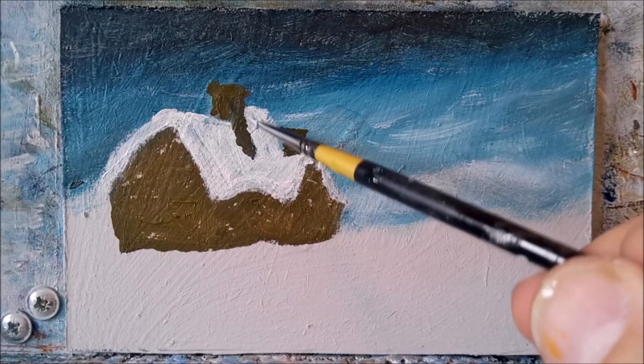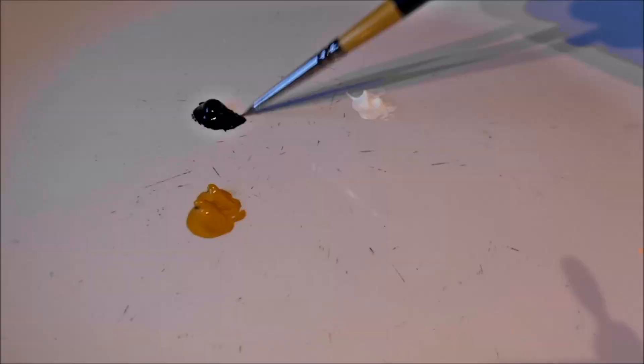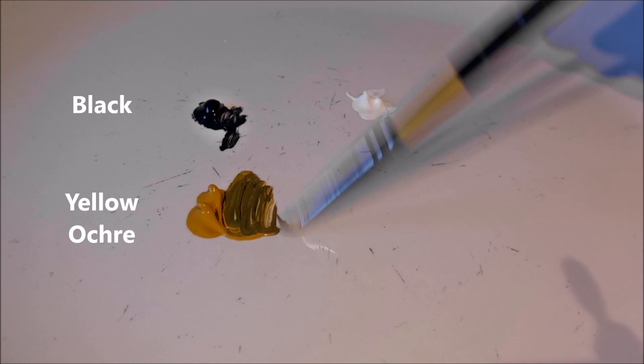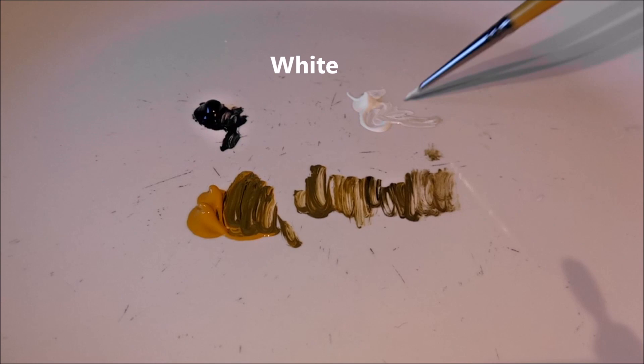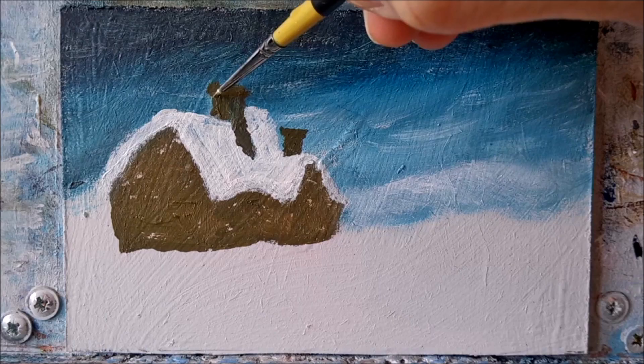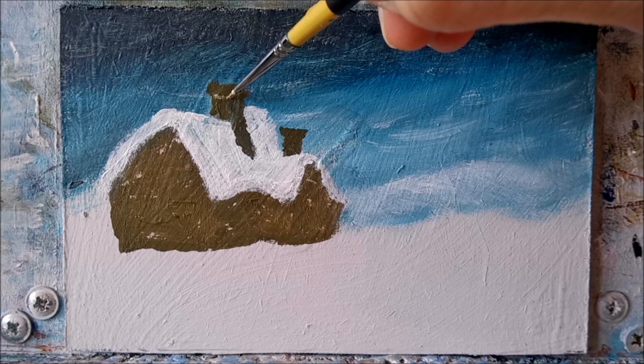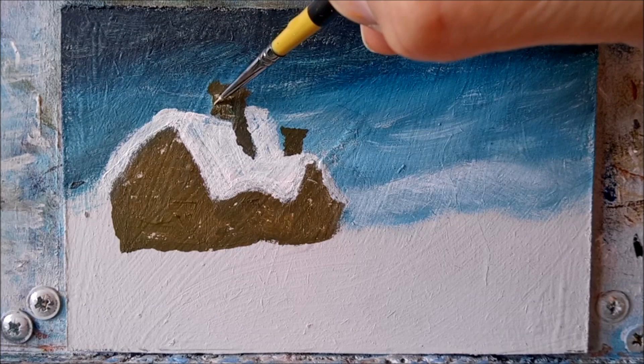All right, now I think we've got the basic shape of the roof done. So with my fine liner brush again, I'm mixing up a nice off-white color to paint in the brickwork around the chimneys. And it's little details like this that just make your painting look a little more special.